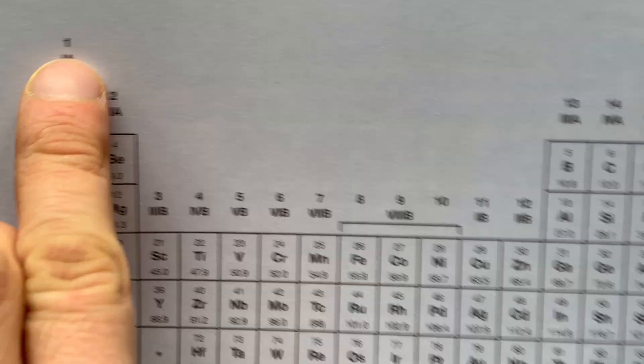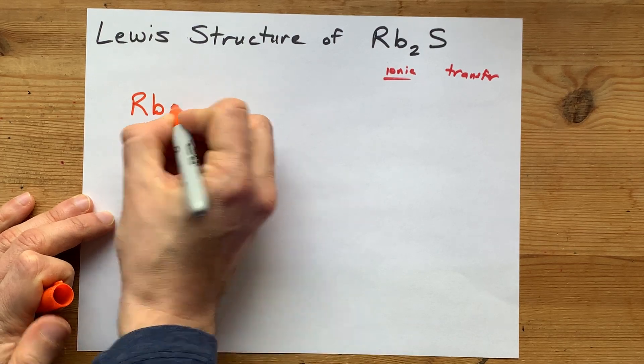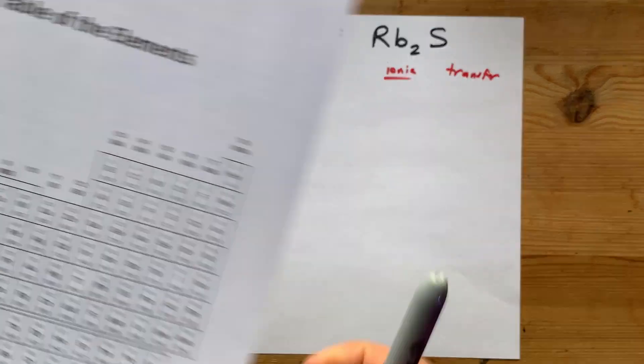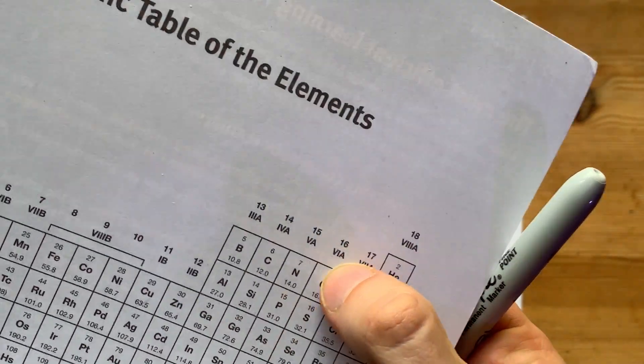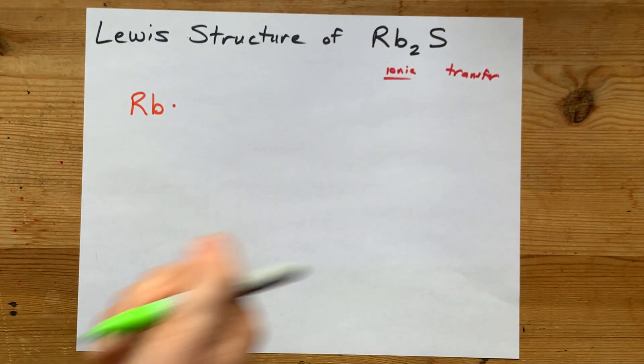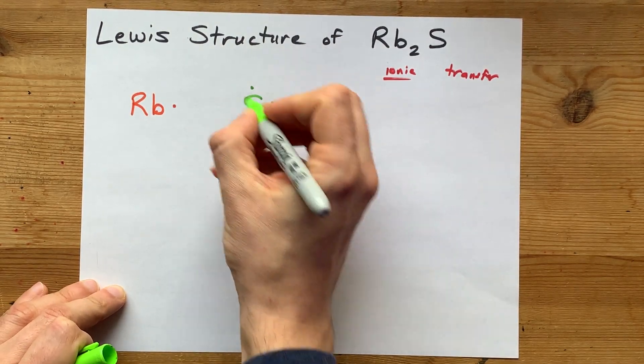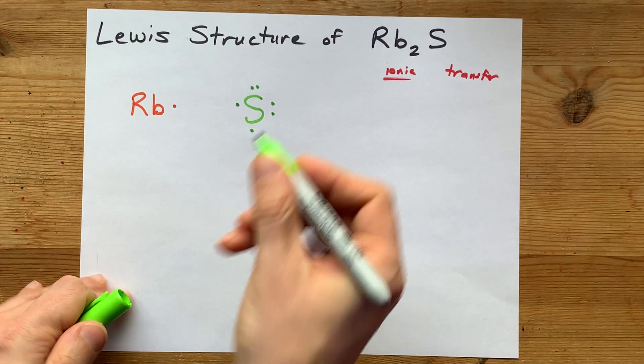Rubidium in group 1 brings a single valence electron with it. So I'm going to draw that out for you. Sulfur, a non-metal in group 16, brings 6 valence electrons with it: 1, 2, 3, 4, 5, 6.